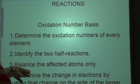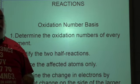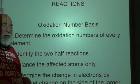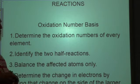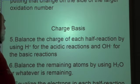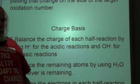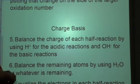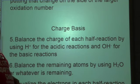Pitfall number one is step three: balance the affected atoms only. Put a big star by that in your notebook — you need to emphasize it. The second pitfall deals with hydrogen ions and hydroxide ions, depending on whether it's acidic or basic. Put a half-star by that, because it's not nearly as big a pitfall as step three. People mostly screw up because of step three.